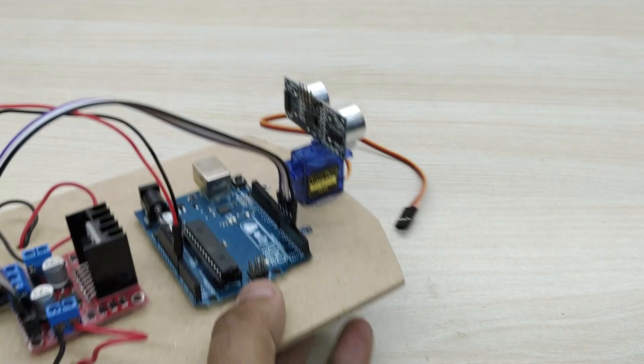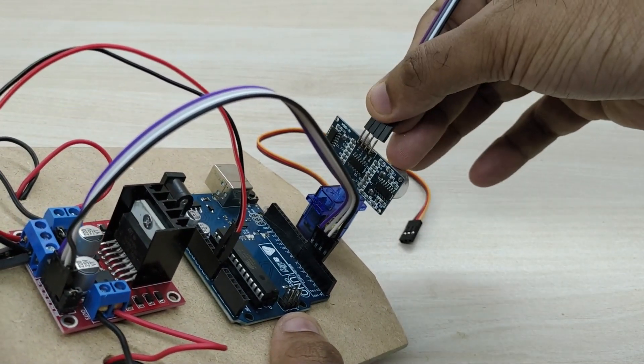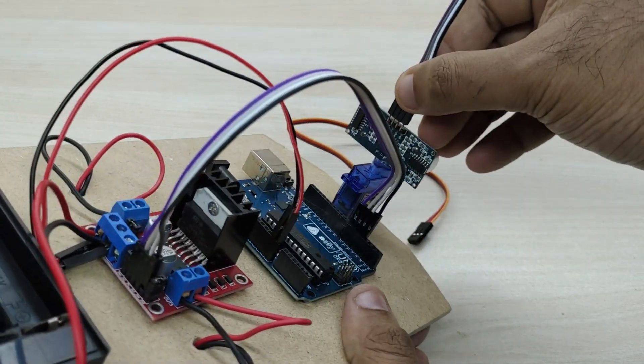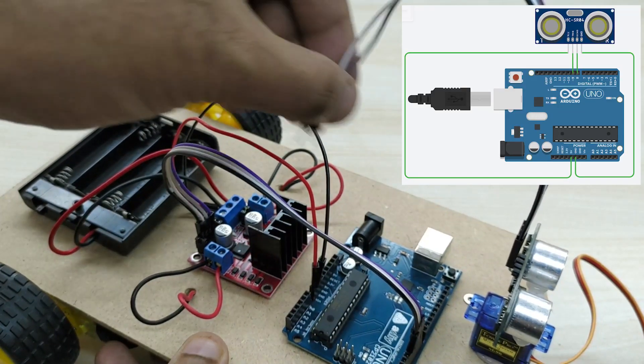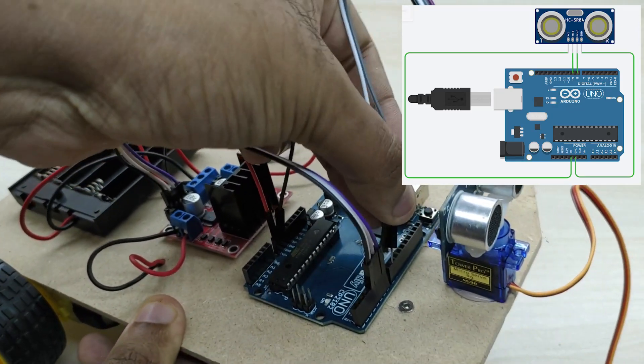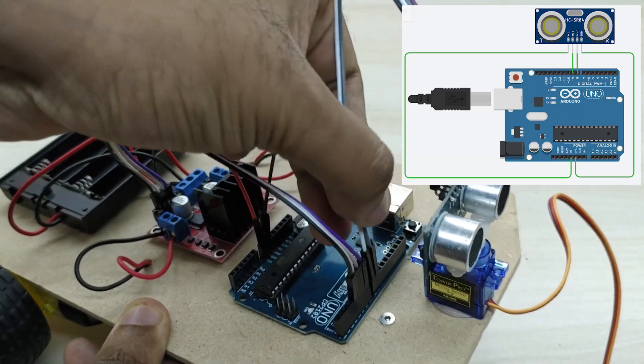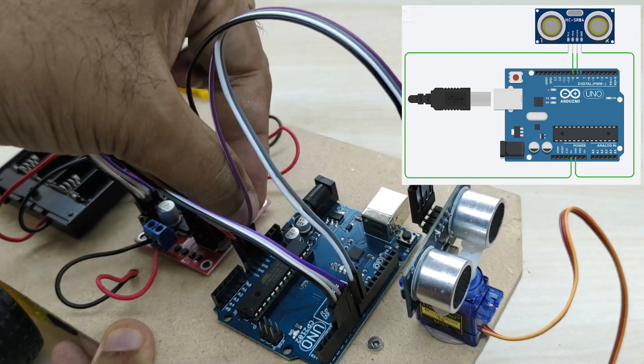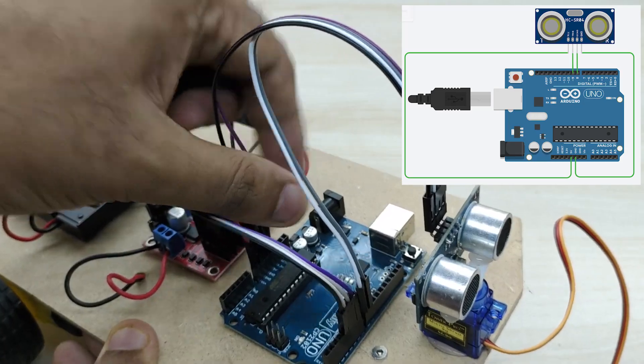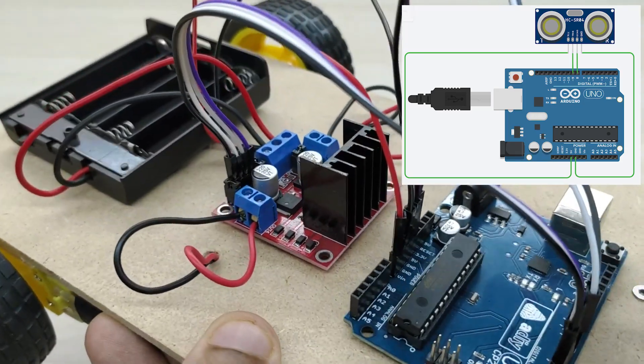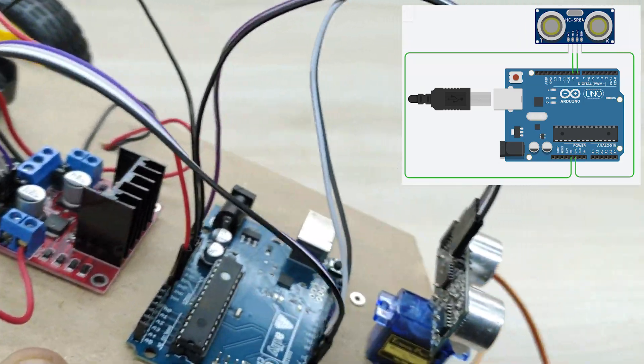Connect another jumper wire to the ultrasonic sensor. Connect the other end to pin number 8 of the Arduino board, trigger pin of the ultrasonic sensor to pin number 9 of the Arduino board, VCC pin of the sensor to plus 5 volt pin of the Arduino board and ground pin of the sensor to ground pin of the Arduino board.